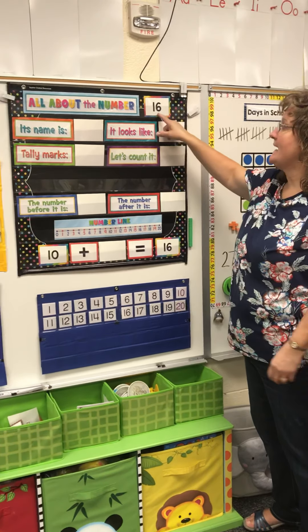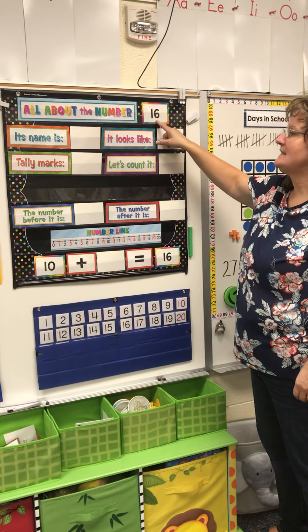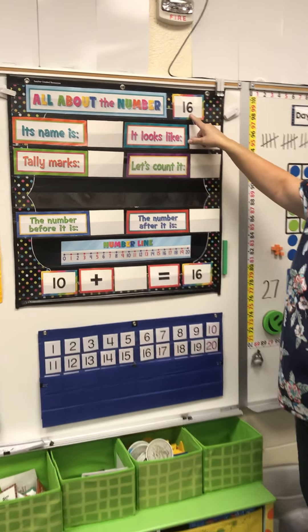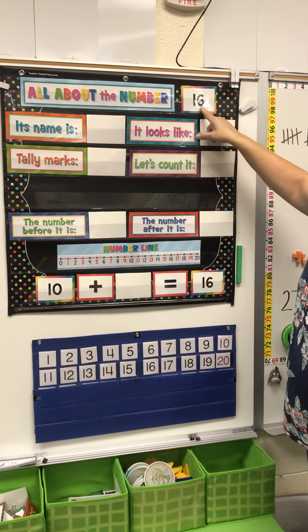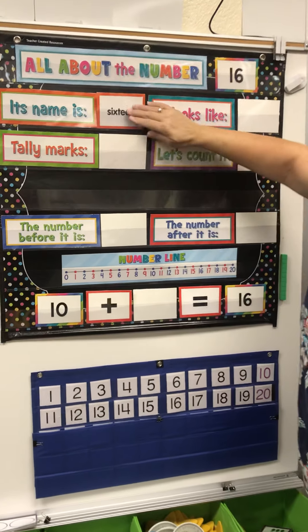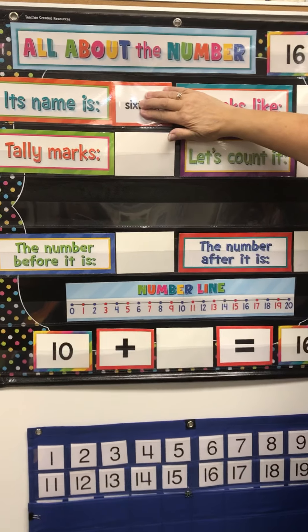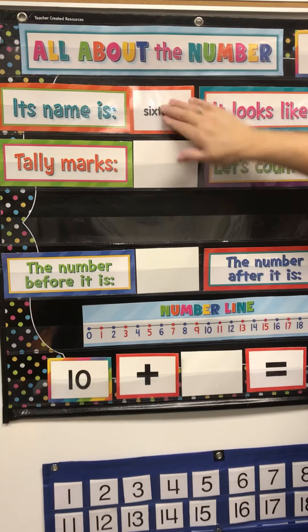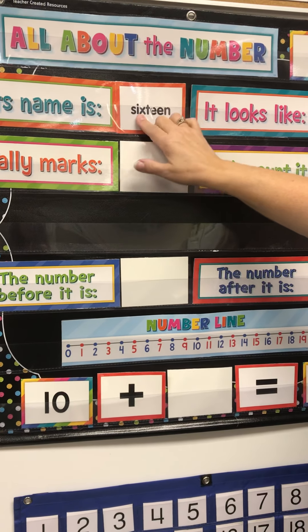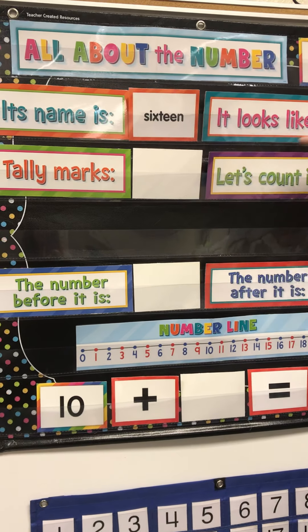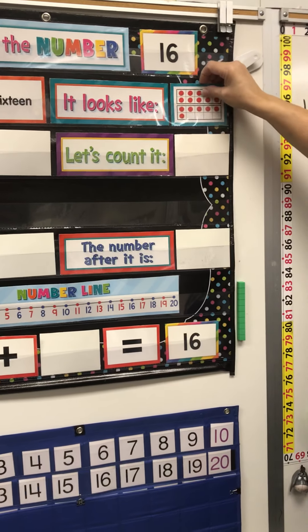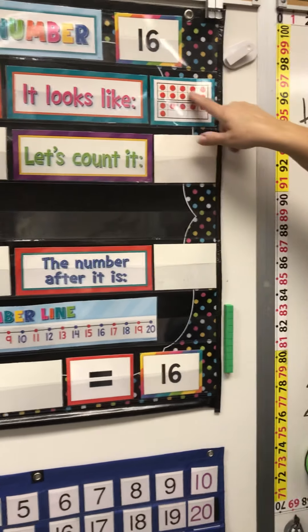Our routine number today is 16. A 1 and a 6 makes 16. Look at the name of 16 — it has the word 'six' and it has the word 'teen.' 16. In a ten frame, 16 looks like this: 10, then 1, 2, 3, 4, 5, 6.